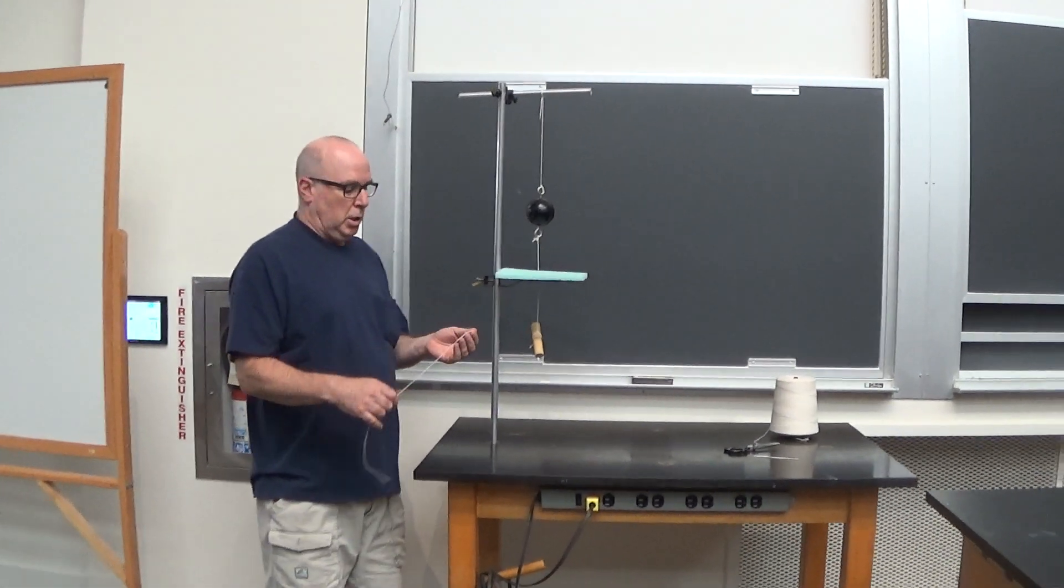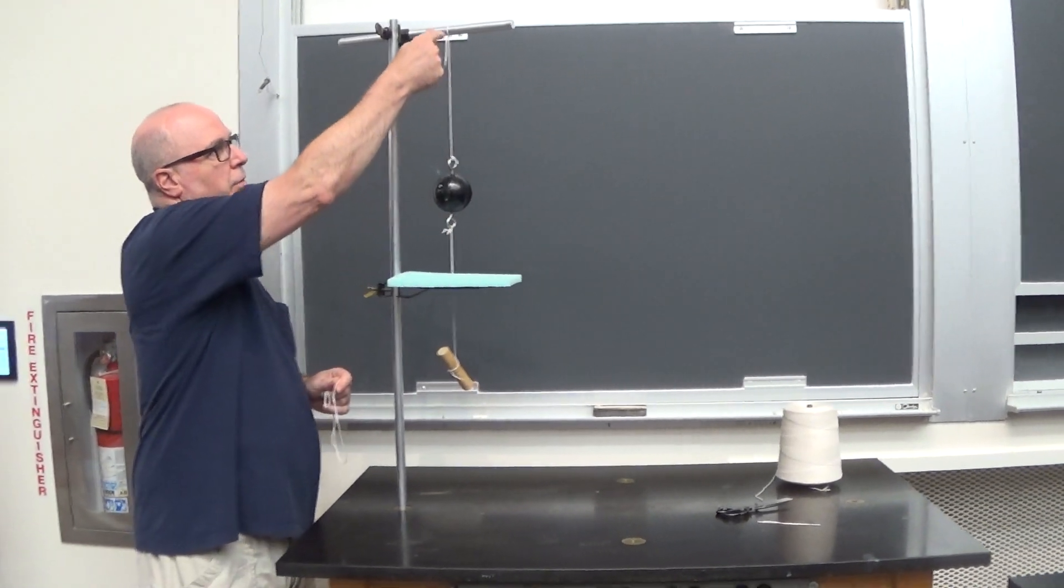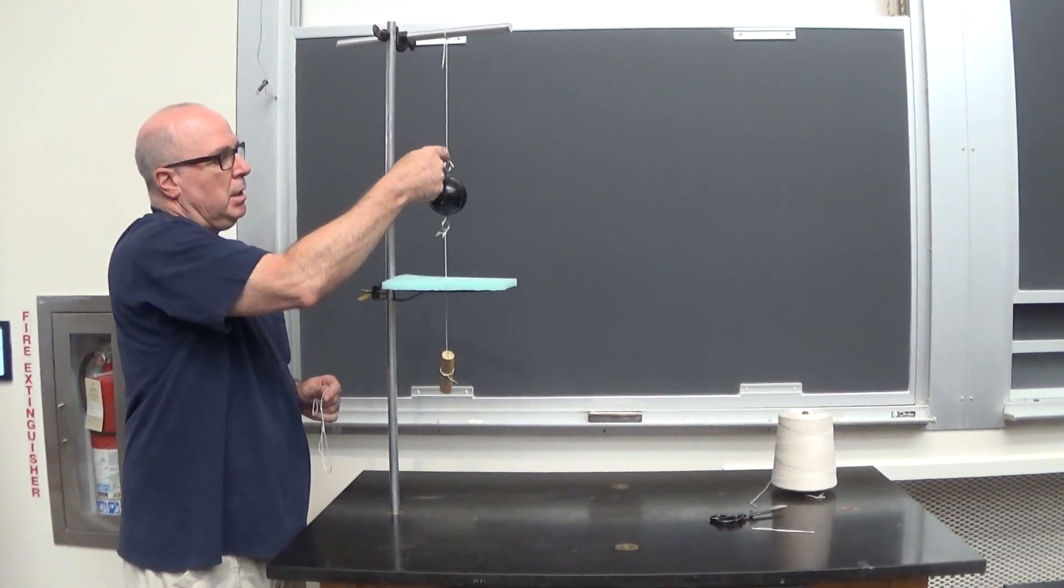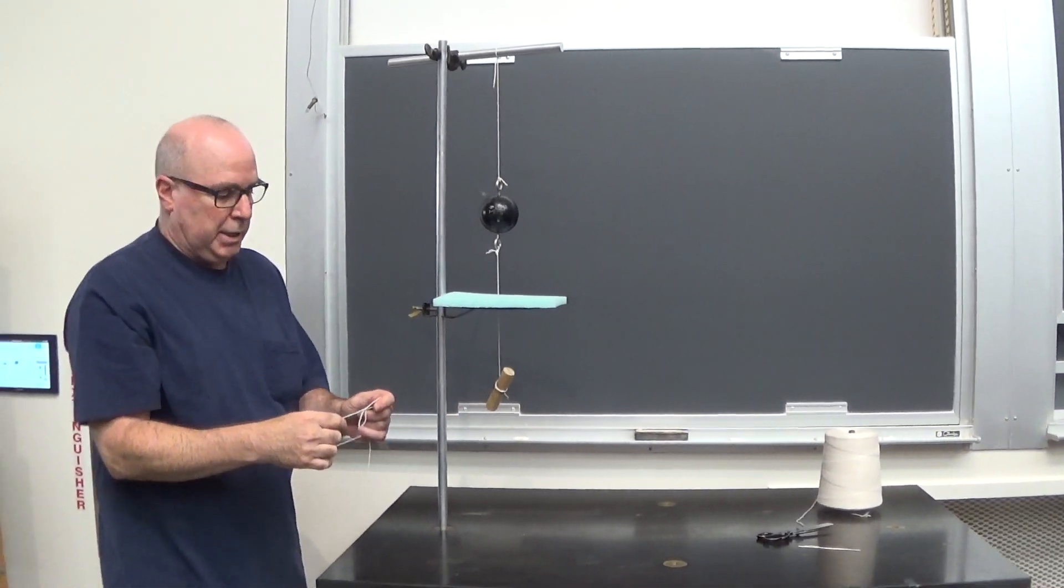Okay, I have a demo of the inertia ball. I have a mass hanging from a top string and then underneath hanging from a bottom string. Both strings are identical.